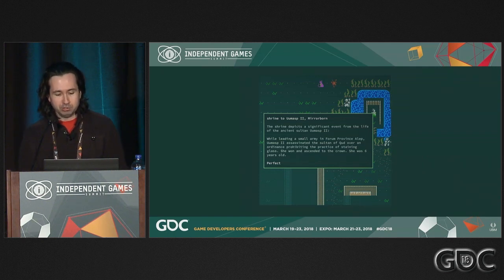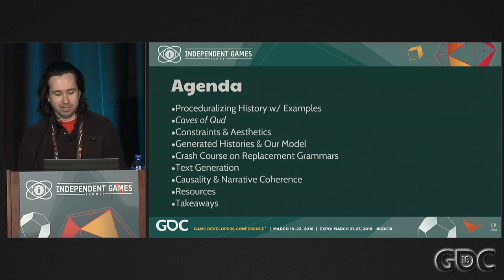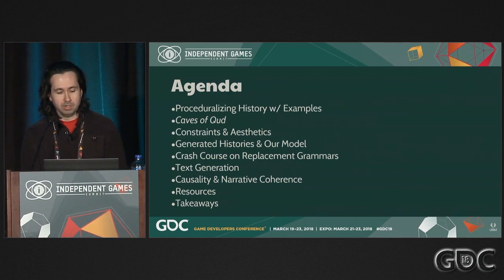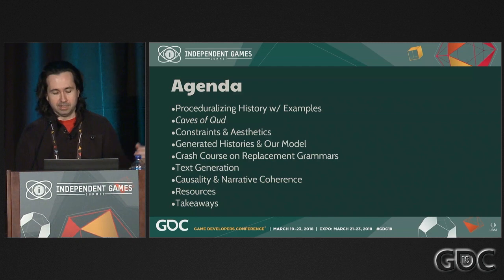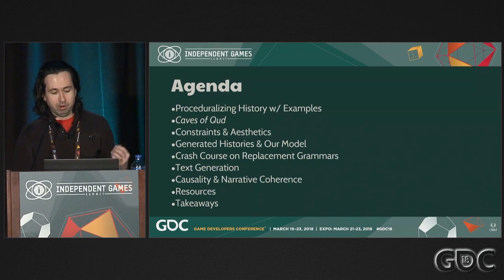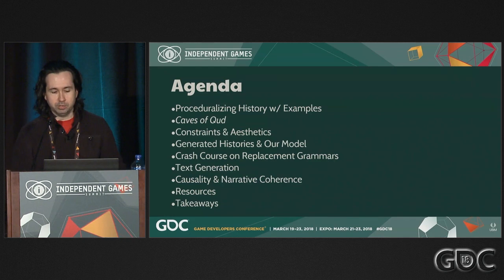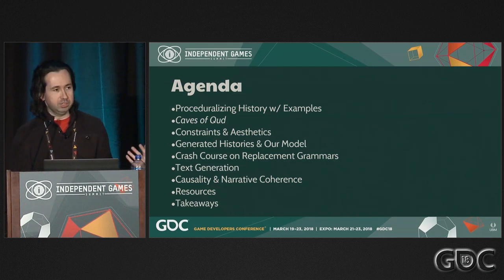This is an example of the procedural history that was generated for one game. I'm going to tell you about how we got here. I'll talk about proceduralizing history in general with some examples, set the context with information about Caves of Qud and our constraints and aesthetics, show more examples of our generated histories and talk about our model, give a quick crash course on replacement grammars, discuss causality and narrative coherence for our histories, and finally give you some resources and takeaways for generating histories in your own systems.